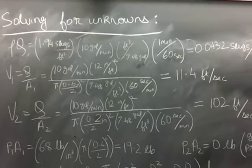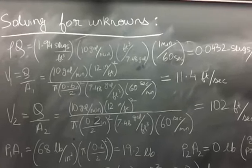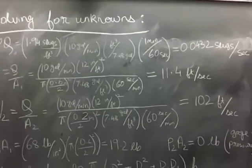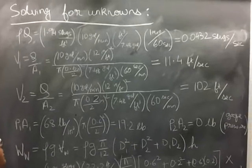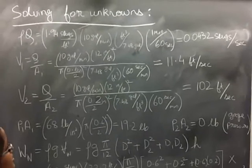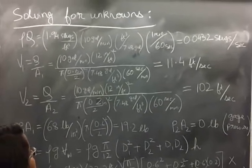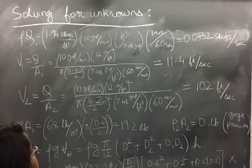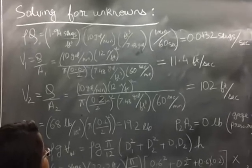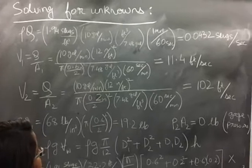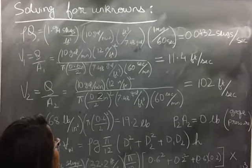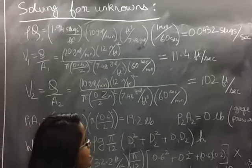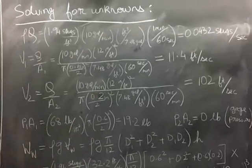Next we solve for all our unknowns. The first is ρ times Q. ρ is 1.94 slugs per cubic foot, found in the book. Multiply that by Q, which is 10 gallons per minute, then by a conversion factor of cubic feet over 7.48 gallons, also from the book. Multiply that by 1 minute over 60 seconds to get everything in slugs per second. The number came out to be 0.0432 slugs per second.